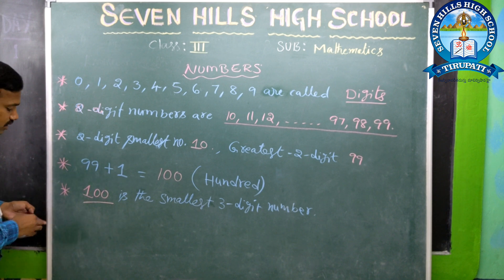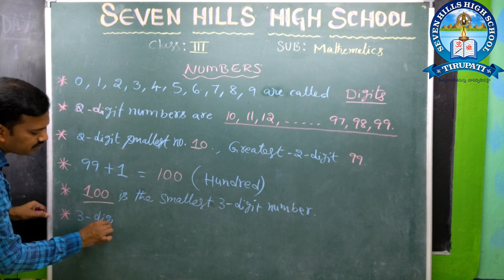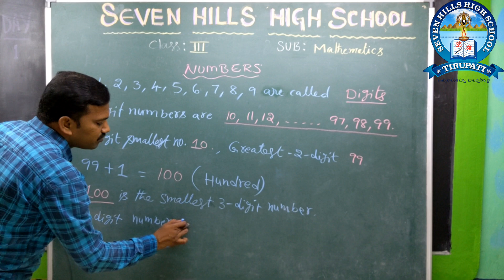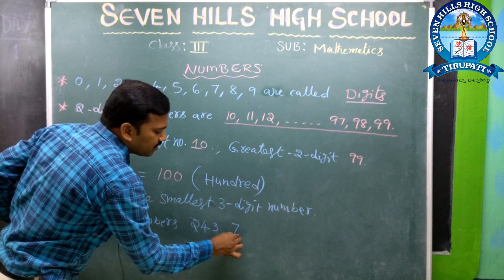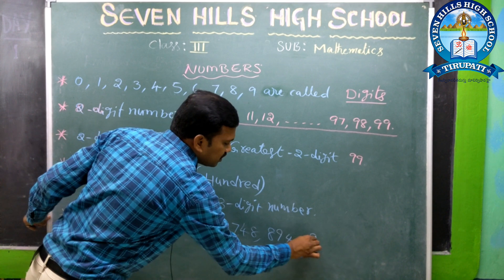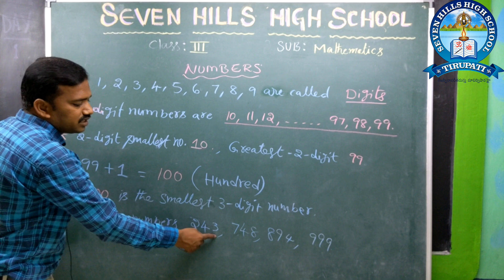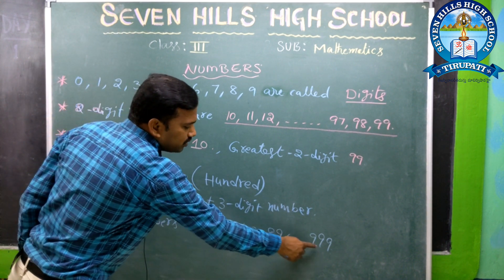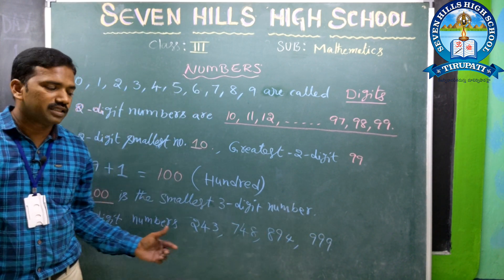3-digit number examples are 243, 748, 894, 999. See here — 1, 2, 3: three digits. Each of these numbers has 3 digits. So these are examples of 3-digit numbers.